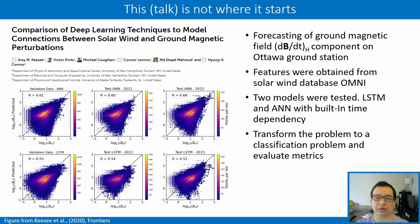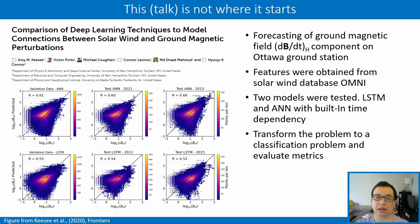The current project is also a continuation of work we published last year. Many details about the model implementation can be found in our Frontiers paper. The idea remains the same — forecasting the ground magnetic field horizontal component — but instead of using only the Ottawa station, we are expanding to many mid- and high-latitude stations. We are using only solar wind parameters from the Omni dataset, and will evaluate models as both a regression problem and a classification problem with several thresholds, many of which are described in Pulkinen et al. 2013.